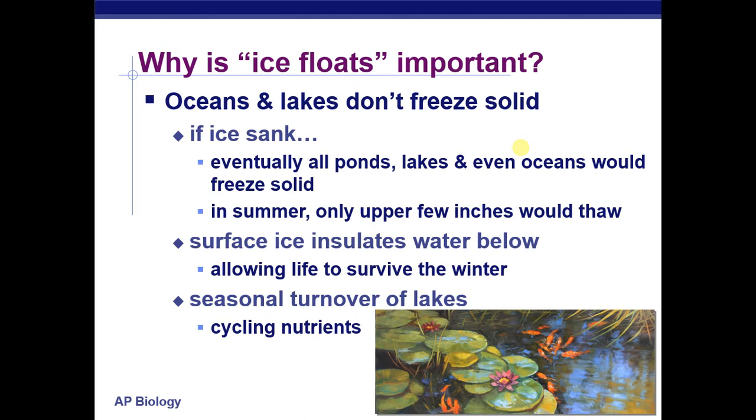Oceans and lakes don't freeze solid. If ice sank, eventually all ponds, lakes, and even the ocean would freeze solid. In summer, only a few inches would ever thaw out. Since ice floats, surface ice insulates the water below it, giving life the ability to survive in the winter. And like we will talk more about in ecology at the end of the year, it also leads to the seasonal turnover of lakes—those cyclings of nutrients. When you might smell in the spring that ponds or lakes really smell bad because those nutrients are being pulled up to the top.